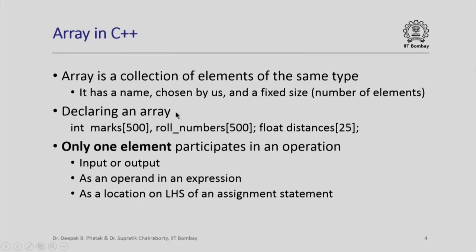To declare an array, we use our standard declaration. Int marks[500] means marks is no more a simple variable but it is an array of size 500. Roll_numbers[500] denotes another array called roll_numbers which has 500 elements. Float distances[25] declares a third array distances with 25 elements, but each of these 25 elements will hold a value of type float.